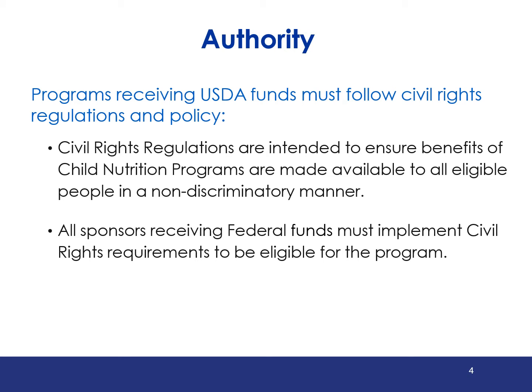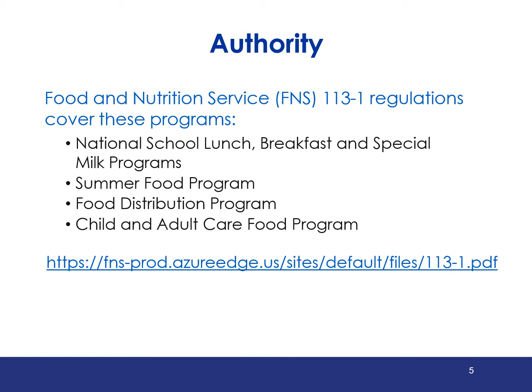Let's begin by discussing legislation and authorities. Programs receiving USDA funds must follow civil rights regulation and policy to ensure benefits of the child nutrition programs are made available to all eligible people who participate in the program. The regulations that outline the SFA or institution's responsibilities regarding civil rights compliance are provided in FNS Instruction 113-1. The purpose of FNS 113-1 is to establish and convey policy, provide guidance and direction to the USDA Food and Nutrition Service and its recipients, and ensure compliance with and enforcement of the prohibition against discrimination in all FNS nutrition programs and activities, whether federally funded in whole or not.